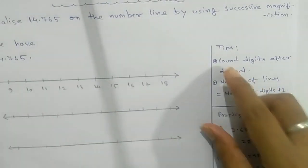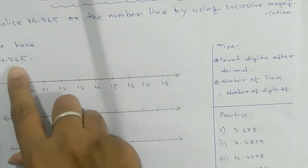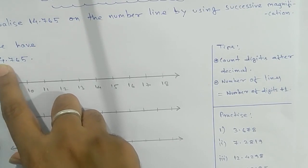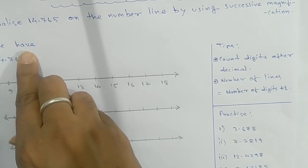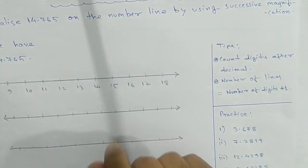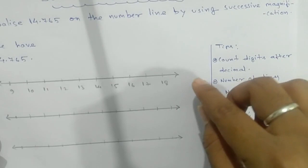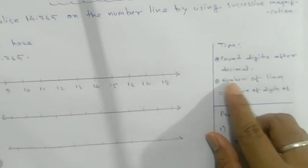Before you start, here are a few tips. You have to see the number of digits after the decimal point. Count the digits: one, two, three. Three digits are there.